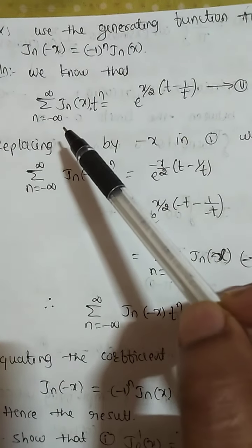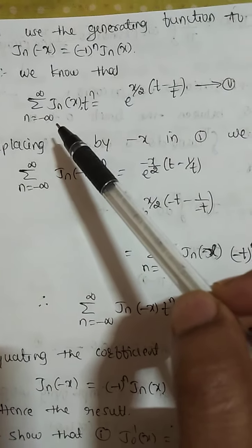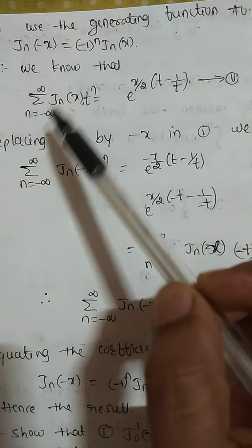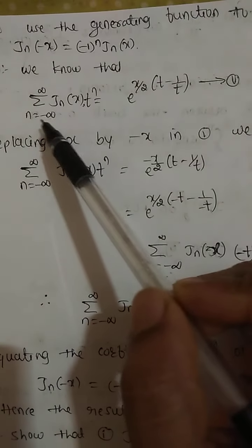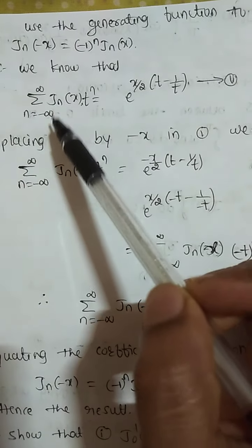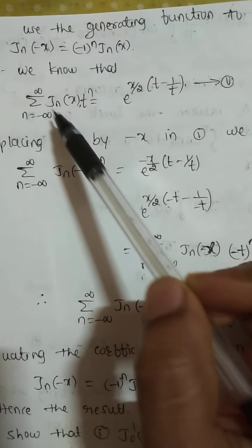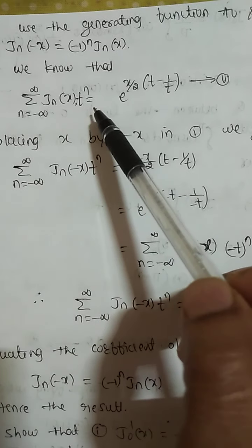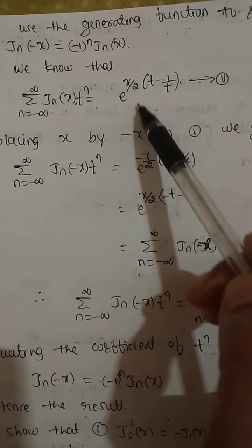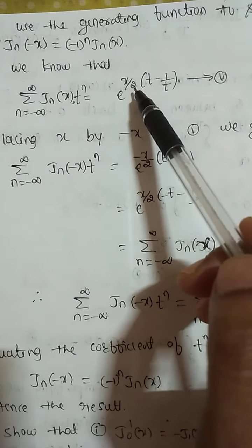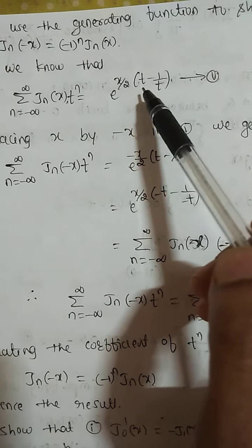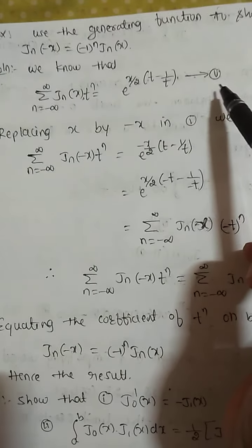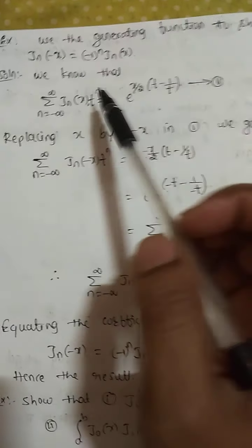We know that the generating function is: summation n from minus infinity to infinity of J_n(x) t^n equals e^(x/2 · (t − 1/t)). We call this equation number 1.